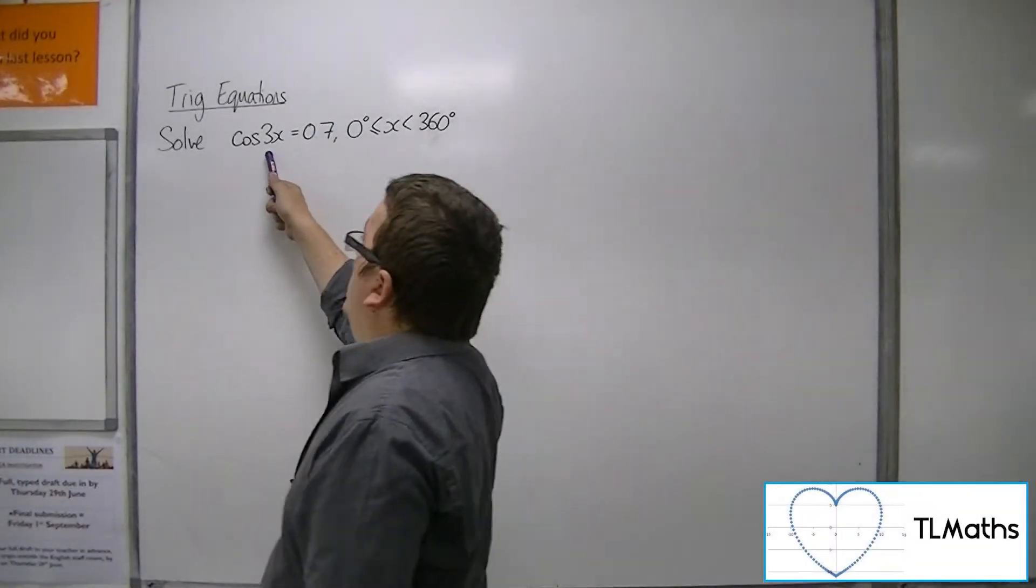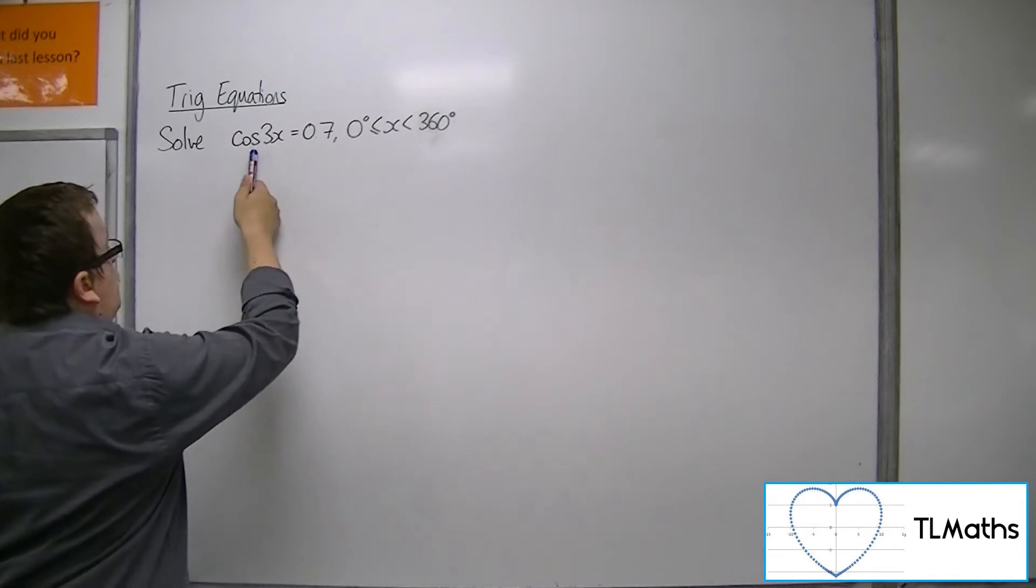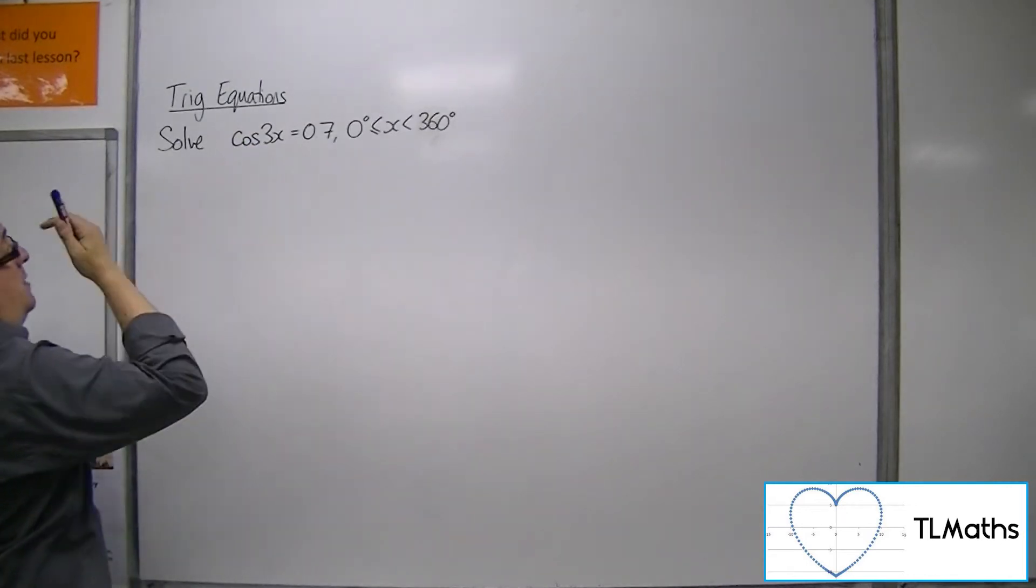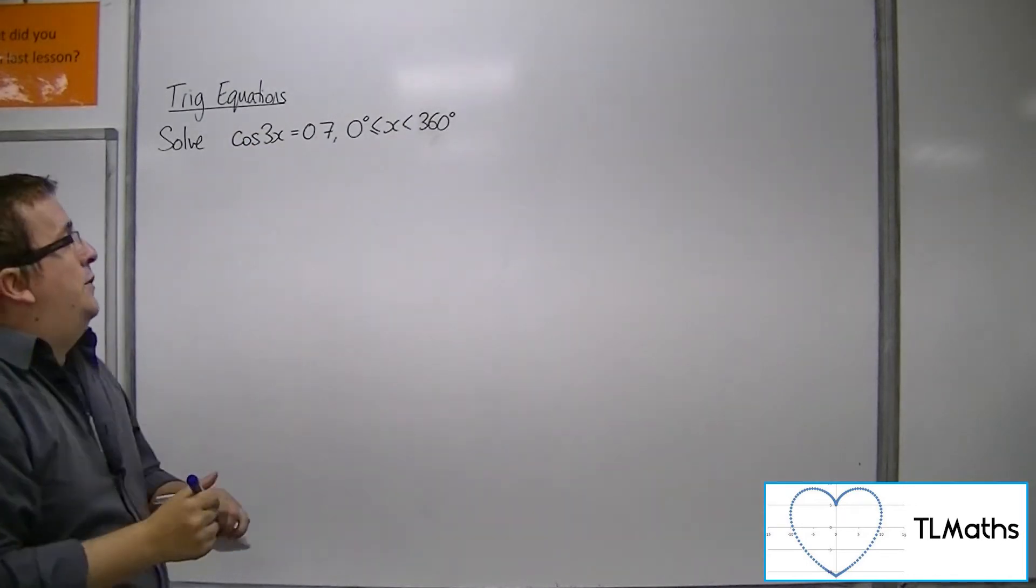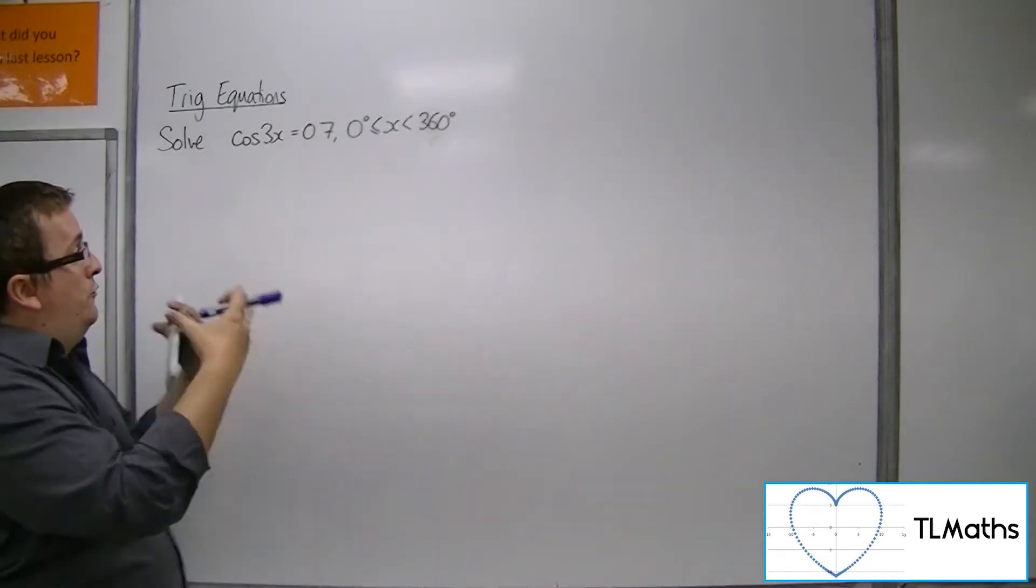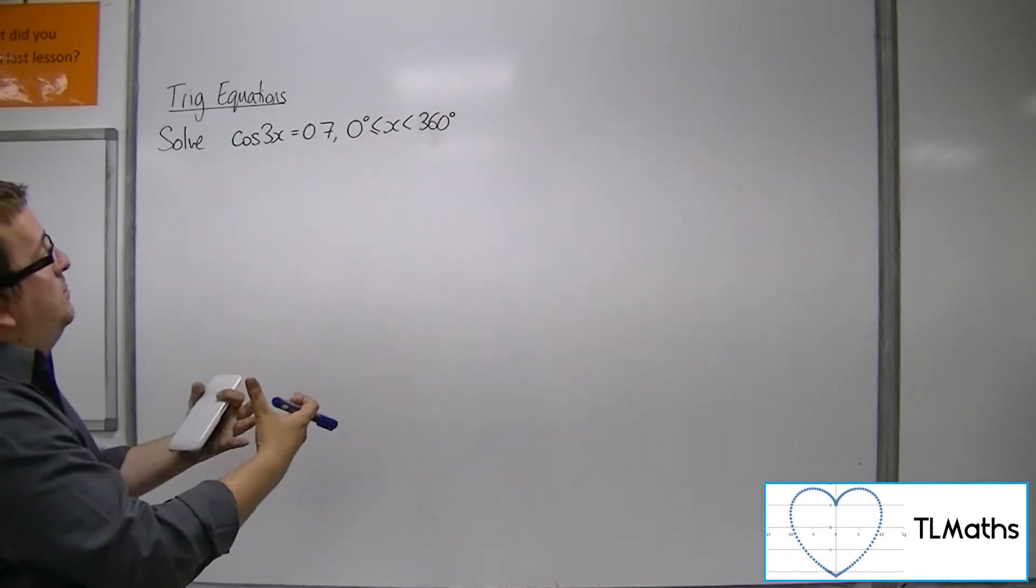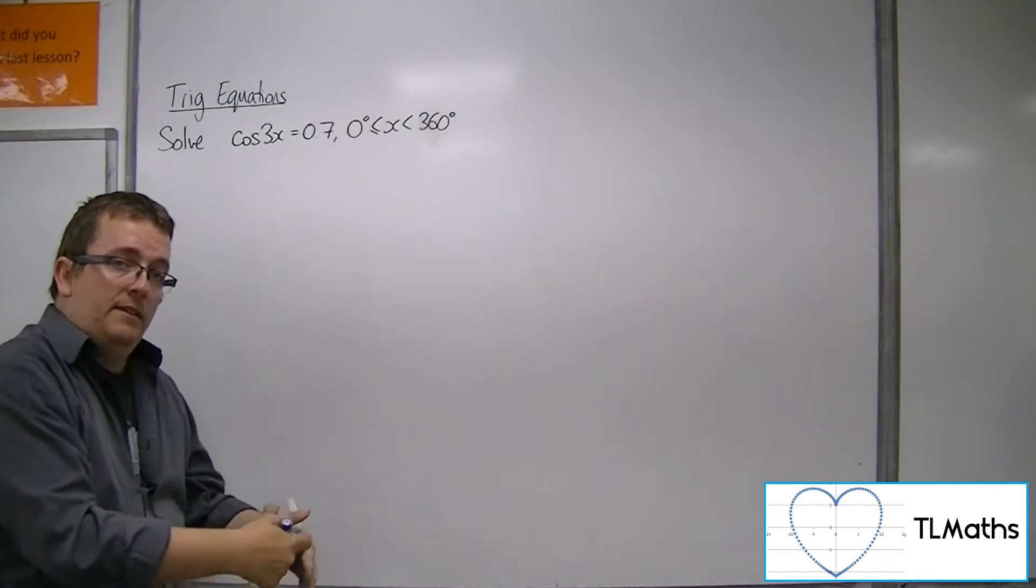Now because we've got cos of 3x, that means that's a stretch factor 1 third parallel to the x-axis. So the period's no longer 360, it's going to be 1 third of 360, so 120.